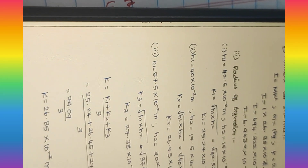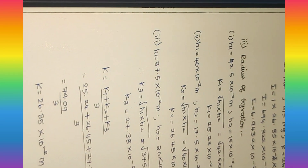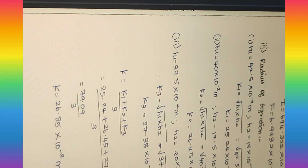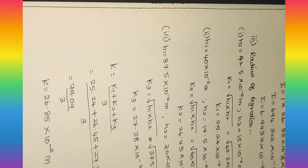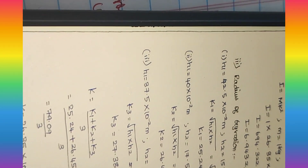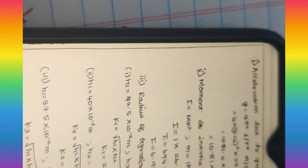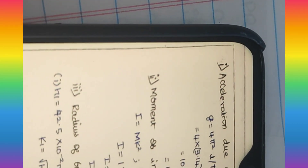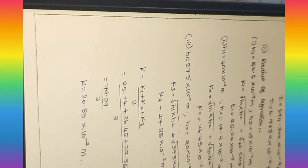For the radius of gyration also, we can take three different readings from the graph because three different lines were connected. We can take the average value for the final radius of gyration. So, radius of gyration is measured, moment of inertia is measured, and acceleration due to gravity is measured. Here we are getting a higher value, but the previous one gives the correct value — G is 9.8 meters per second square.